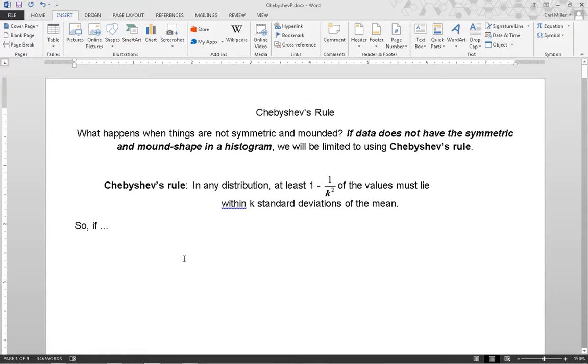Chebyshev's rule. What happens when things are not symmetric and mounded? If data does not have the symmetric and mound shape in a histogram, we will be limited to using Chebyshev's rule. Chebyshev's rule says in any distribution, at least 1 minus 1 over k squared of the values must lie within k standard deviations of the mean.